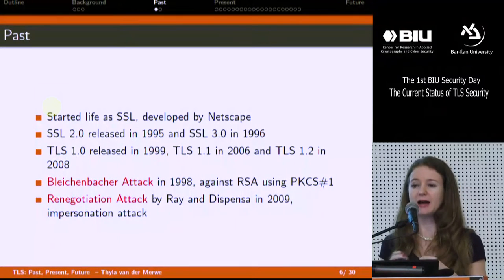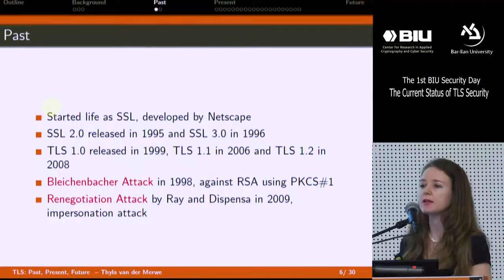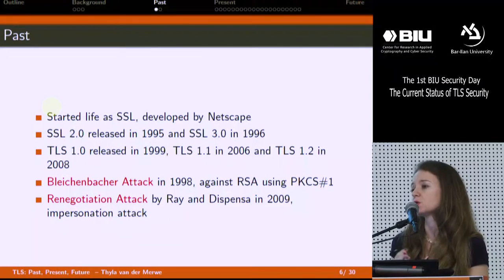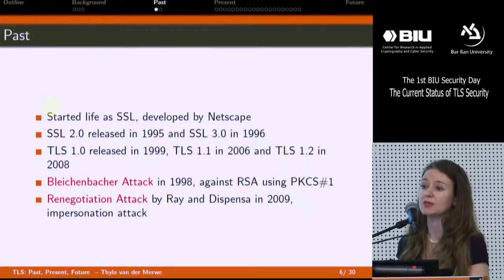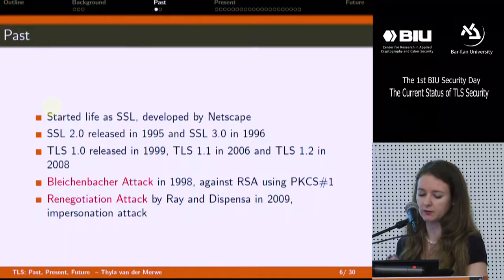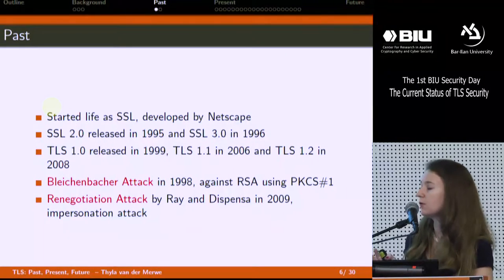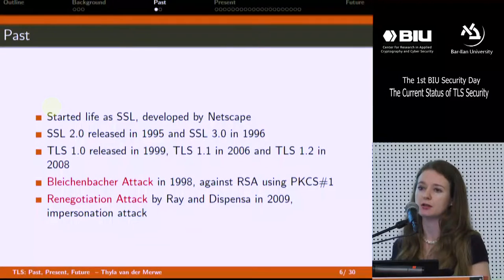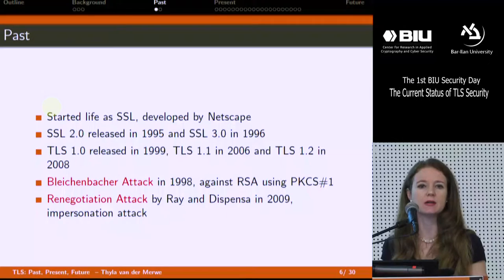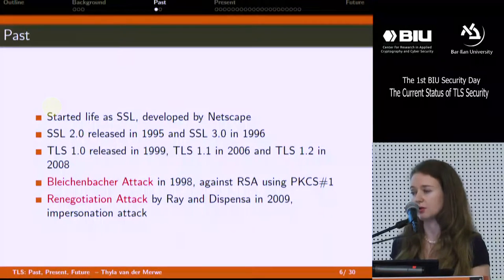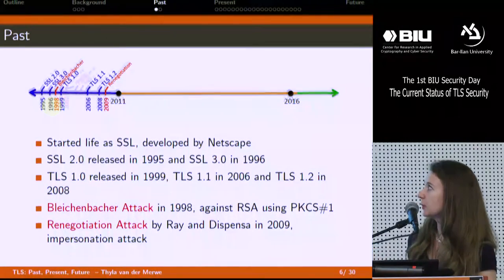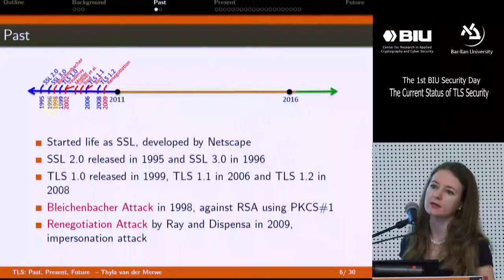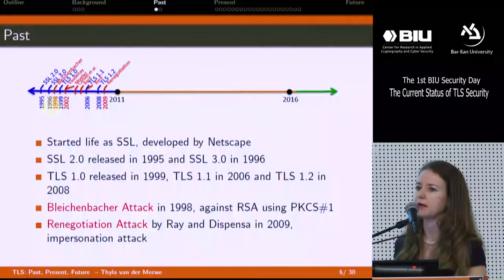In this era, I'm only going to highlight two attacks. In 1998, we had the Bleichenbacher attack against RSA when PKCS #1 encoding was used for encryption — SSL version 3 was susceptible to this plaintext recovery attack. Then in 2009, Ray and Dispenser published the renegotiation attack, which exploited a particular type of TLS handshake known as the renegotiation handshake. When we populate our timeline, it looks sparse, but there was actually a little more going on with other analyses I haven't touched on.